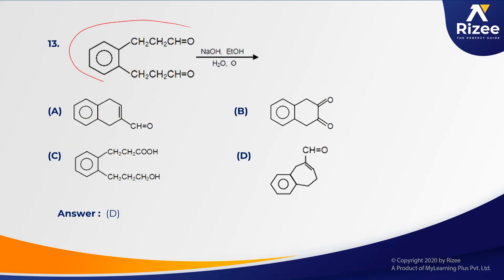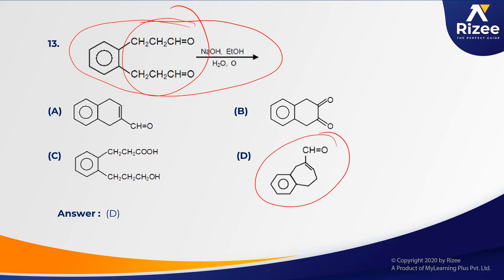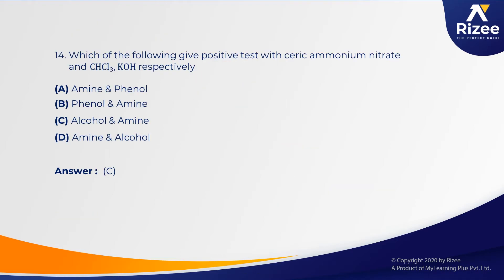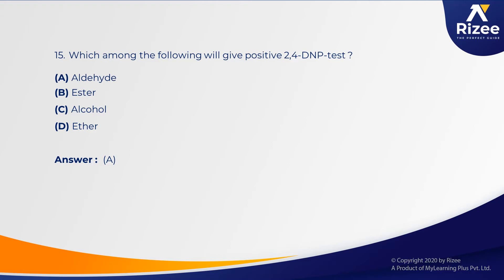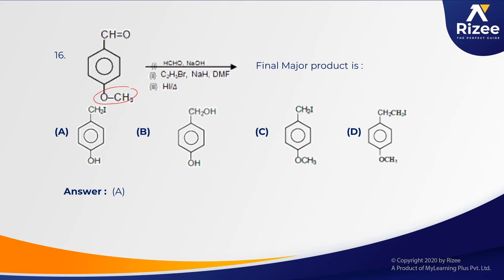The next question covers properties of aldehydes — an aldehyde forming a cyclic aldehyde compound. This type of question is from Aldehydes, Ketones and Carboxylic Acid. Also: CHCl₃ in presence of KOH — this is the Reimer-Tiemann reaction. Next: which among the following will give positive 2,4-DNP test? The 2,4-DNP test is exclusive for aldehydes. Another question involves ethers and aldehydes — combining Alcohols, Phenols and Ethers with Aldehydes, Ketones and Carboxylic Acid along with Haloalkanes, so three chapters are linked.